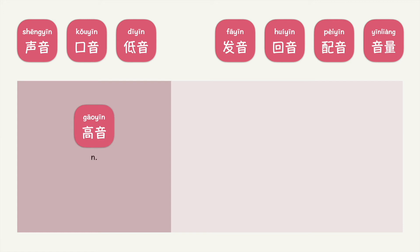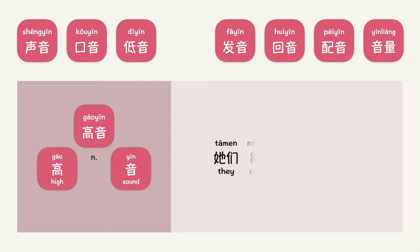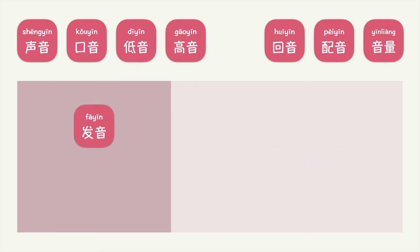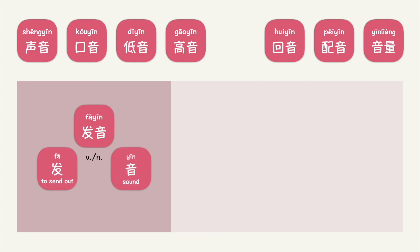高音. 高音 is also a noun. 高 means high, 音 means sound. Put into context, you can say: 他们能唱高音吗？ What do you think 高音 means? 高音 means high pitch, a soprano, or a treble.